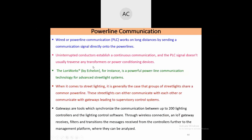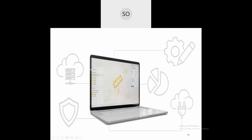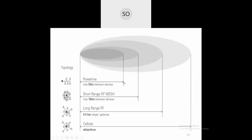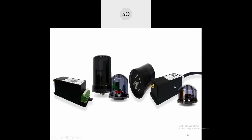Various communication technologies are available for connecting the central command control room to individual lamps or distribution panels: Power Line Communication (PLC) with 50-meter range, RF Mesh technology extending to 100 meters, Long-Range RF reaching 3–5 kilometers, or Cellular Network (unlimited range). Sensors available include those for humidity, temperature, noise, and pollution — used for different monitoring purposes.